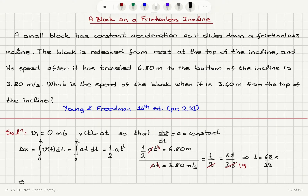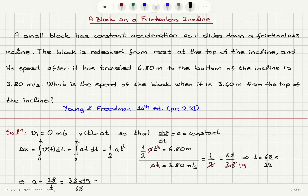I acquired a speed of 3.8 meters per second in this time interval under constant acceleration, so the acceleration a equals delta v over t, which is 3.8 times 19 divided by 68. Dividing top and bottom by 2 gives 1.9 times 19 divided by 34. Since 1.9 times 19 equals 36.1, the acceleration is 36.1 divided by 34, which is approximately 1.06 meters per second squared.